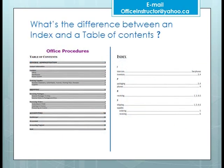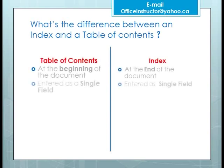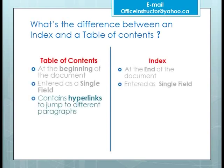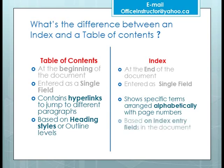Although a table of contents is usually created at the beginning of a document while an index is usually at the end, both are entered as a single field. A table of contents contains hyperlinks to jump to different paragraphs and is based on heading styles or outline levels, while an index shows specific terms arranged alphabetically with page numbers and is based on index entry fields in the document.